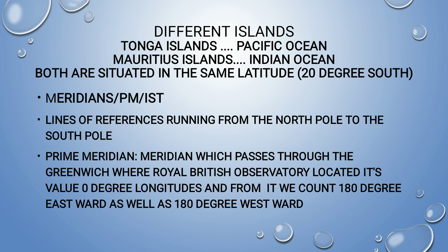Now moving on to meridians and prime meridian. Meridians are lines of reference running from the North Pole to the South Pole — they are a type of longitude, which are vertical lines. The prime meridian passes through the Royal British Observatory in Greenwich, London. Its value is zero degrees longitude. From the prime meridian we count 180 degrees eastward and 180 degrees westward.